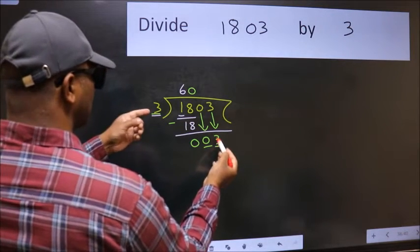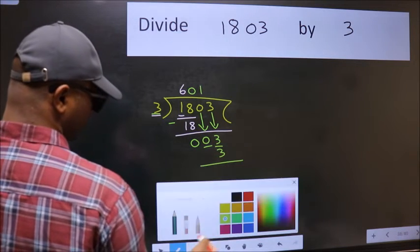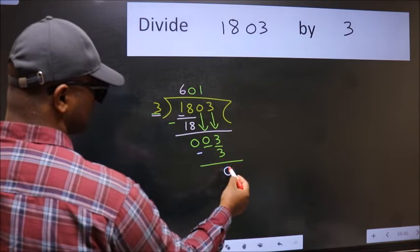When do we get 3 in the 3 table? 3 once is 3. Now we should subtract. We get 0.